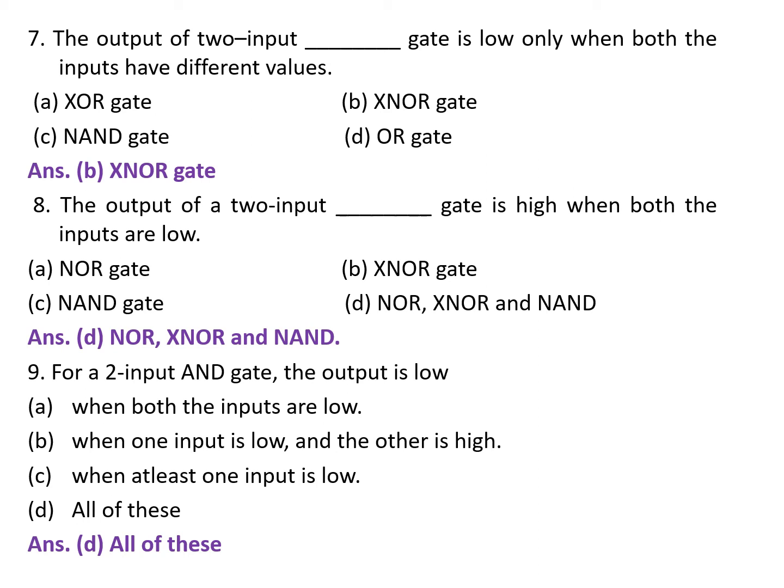Next question: for a 2-input AND gate, the output is low — A. When both the inputs are low. B. When one input is low and the other is high. C. When at least one input is low. D. All of these. The correct answer is D — all of these.